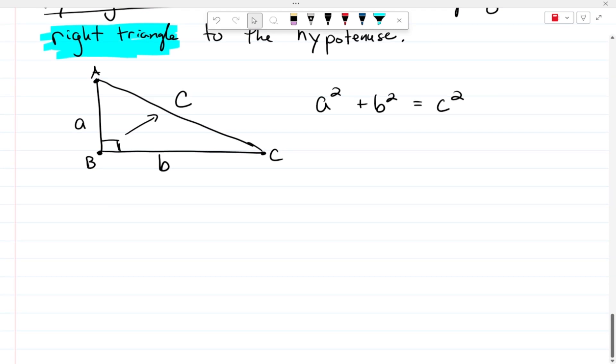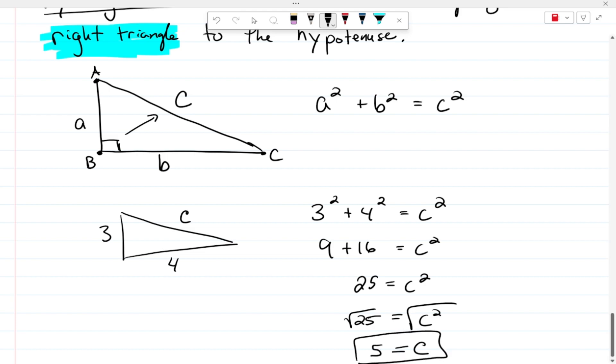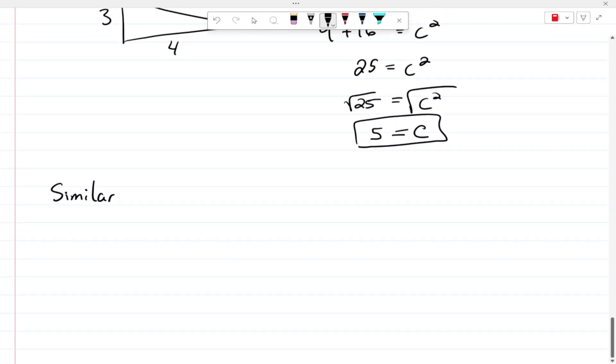So earlier I mentioned a Pythagorean triple. Well, what makes a Pythagorean triple so special is that if we were to use the Pythagorean theorem here to find C, notice that you end up getting very nice whole number answers. So if we have sides 3 and 4, 3 squared plus 4 squared is going to be 9 plus 16, which is 25 equals C squared. When we take the square root of both sides, whenever you get a nice whole number answer like the number 5, we call that a Pythagorean triple. And there's a bunch of them that exist. In fact, that's going to lead us into our next topic, which are similar triangles.